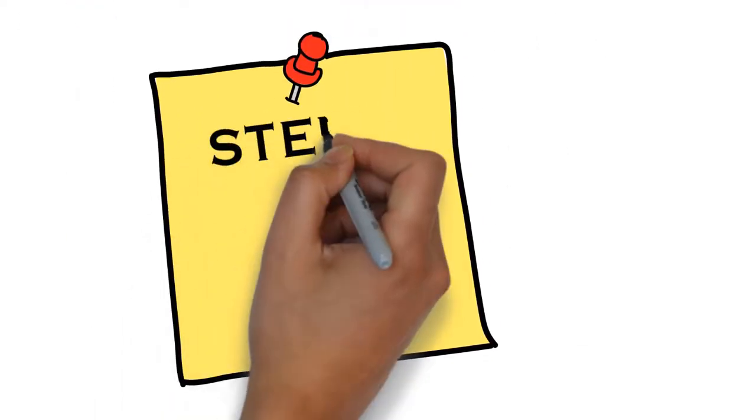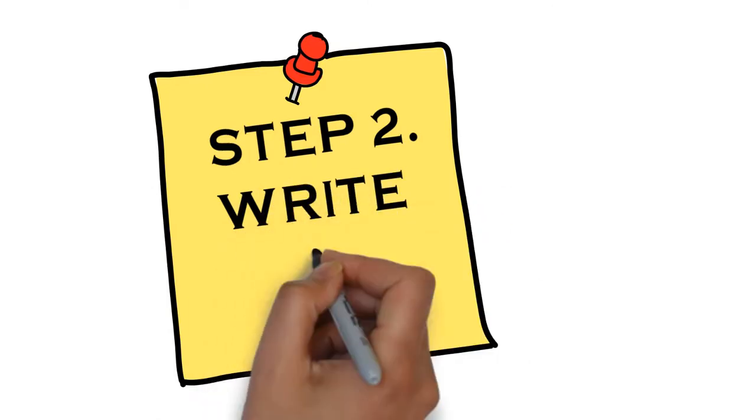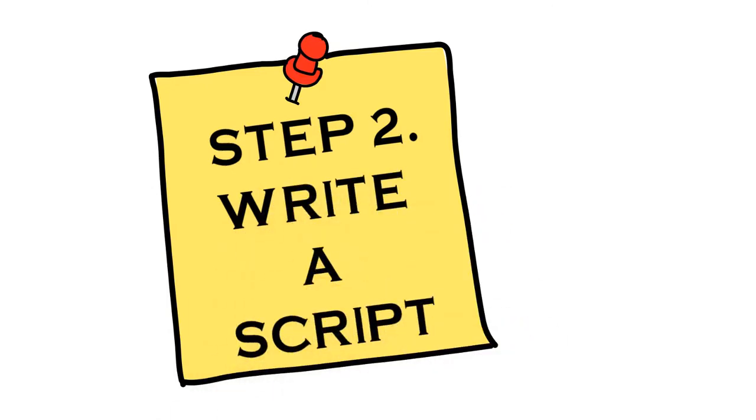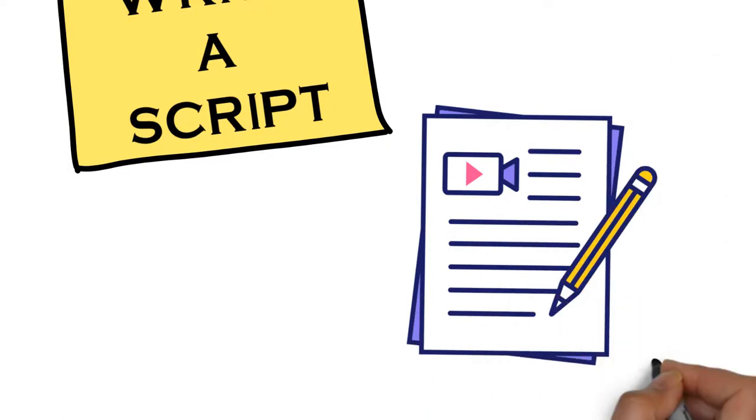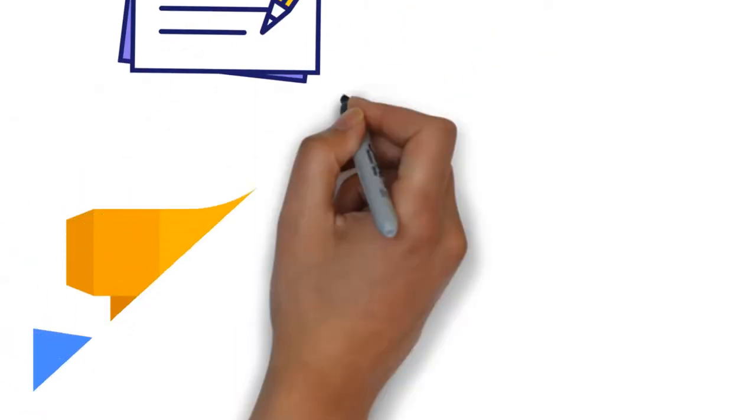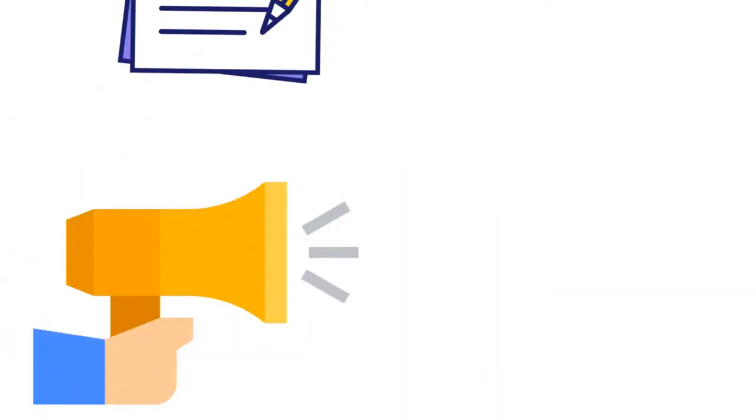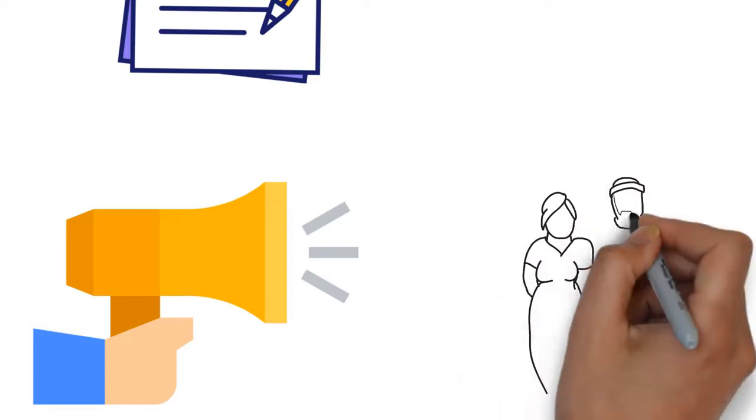Second step in this framework: after you know why you are creating the whiteboard animation, write a script. Now this is the message, the content of your whiteboard animation video, and this actually depends on the purpose of the video.